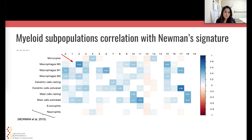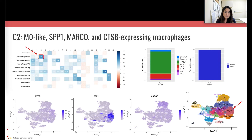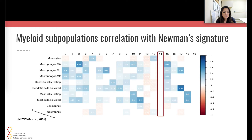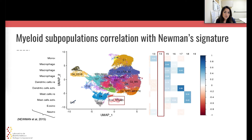These clusters were predominantly found in the tumor samples and expressed some important genes already associated with tumor progression, such as SPP1, MARCO, and STSB, corroborating some of our previous results published this year regarding metastatic melanoma. We also found a cluster with no correlation with the evaluated signatures that expressed TPSAB1, suggesting a potential new macrophage subtype, but new analyses are needed in order to better characterize these cells.